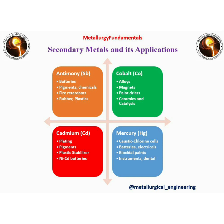Mercury is used in caustic chlorine cells, batteries, electricals, biocidal paints, instruments and dental applications. Cadmium is used in plating, pigments, plastic stabilizers and NiCd batteries.